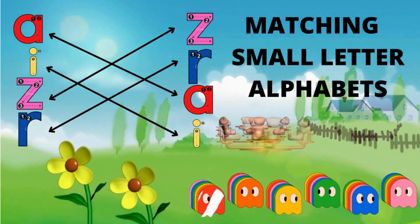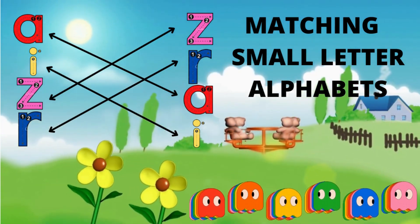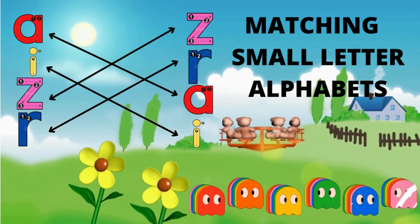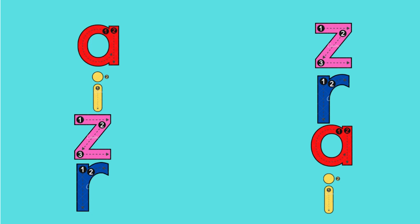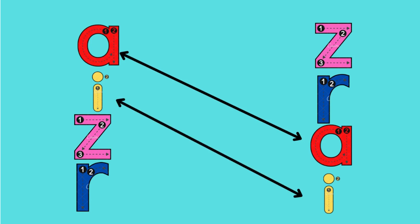Hello kids, welcome to my channel. Now match the small letter alphabet. E — where is e? Yes, it's the red one. Where is small i? Match it. Yes, it's the yellow one.